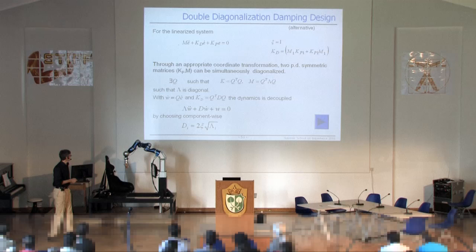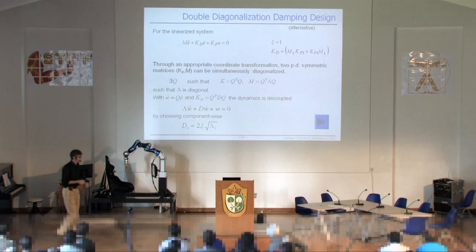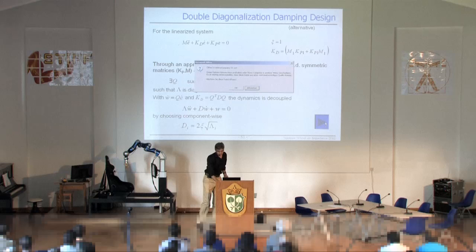If you choose D such that D is 2 psi times the square root of lambda I, these elements are diagonal, so it's easy to take the square root, and you have the desired behavior.